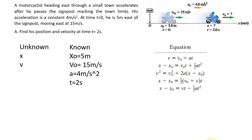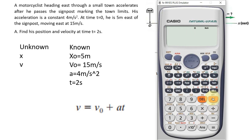Next, let us compute his final velocity at t equals 2 seconds. We can use the first kinematic equation: final velocity equals initial velocity plus acceleration times time. Inputting our values: final velocity equals 15 plus 4 times 2 seconds. Therefore, the final velocity is 23 m per second.